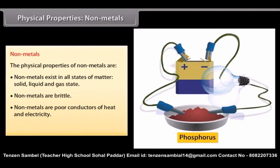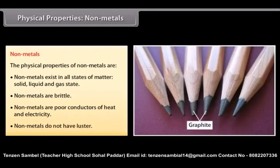Graphite. Carbon is an exception as it is a good conductor of electricity and is used in making electrodes. Luster. Non-metals have no metallic luster and do not reflect light.